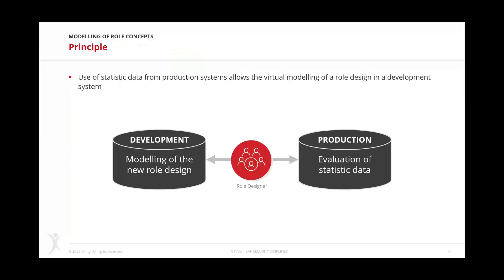The principle of how the Role Designer works is very simple. We can take information from different sources. The traditional approach takes usage information — statistical usage history — from production, as the production system has the most valuable usage data. If we're redesigning IT roles for developers, we might take information from a development system instead. Any system can serve as a source to input information into the role designer, though typically it's from production.